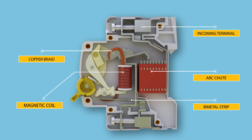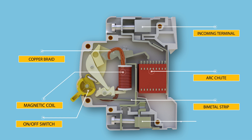A copper braid connects the moving element with the static element. The on/off switch is the operator with which we manually interrupt or turn on the electric circuit. At the outgoing terminal, we connect the phase from the circuit breaker.